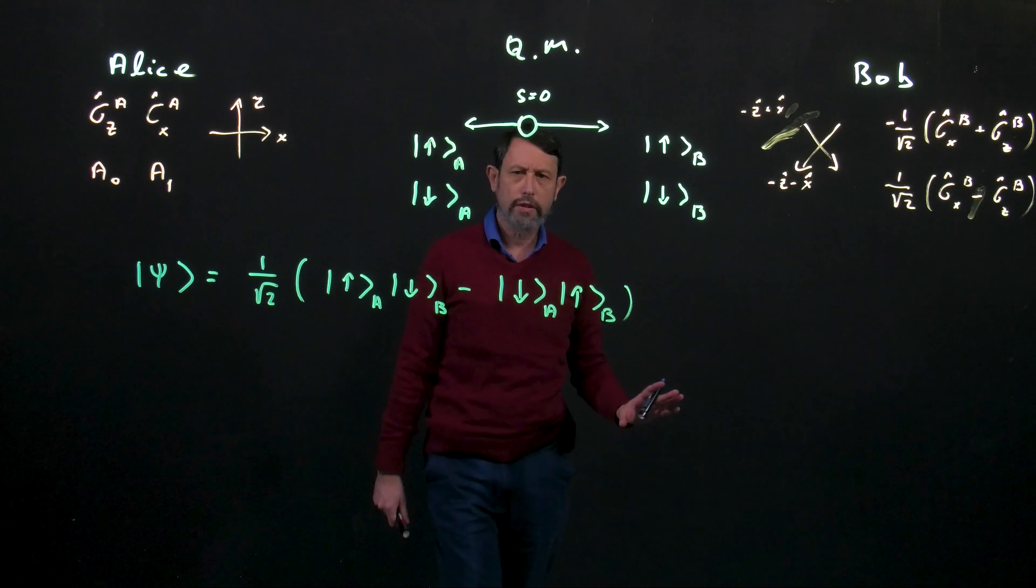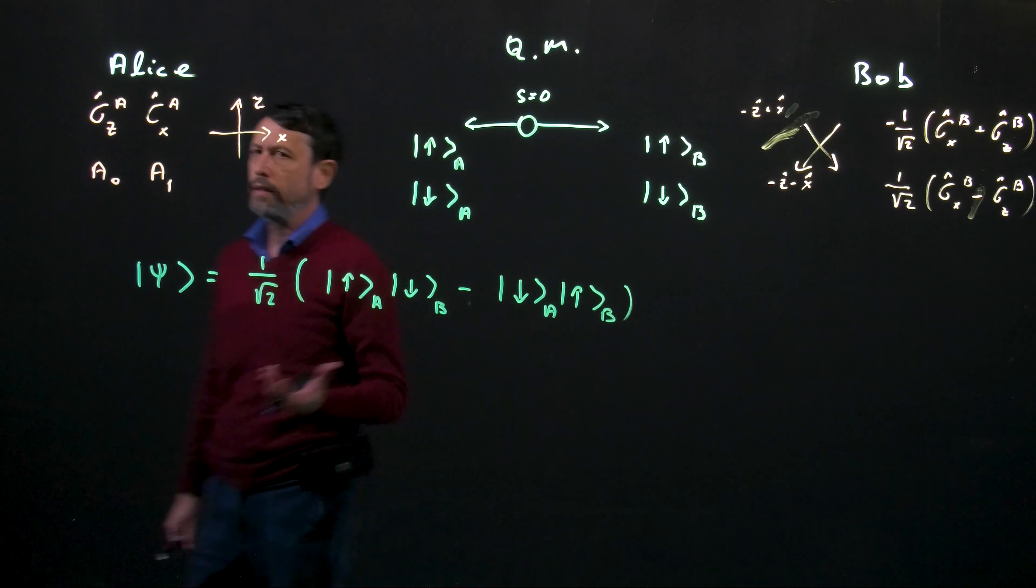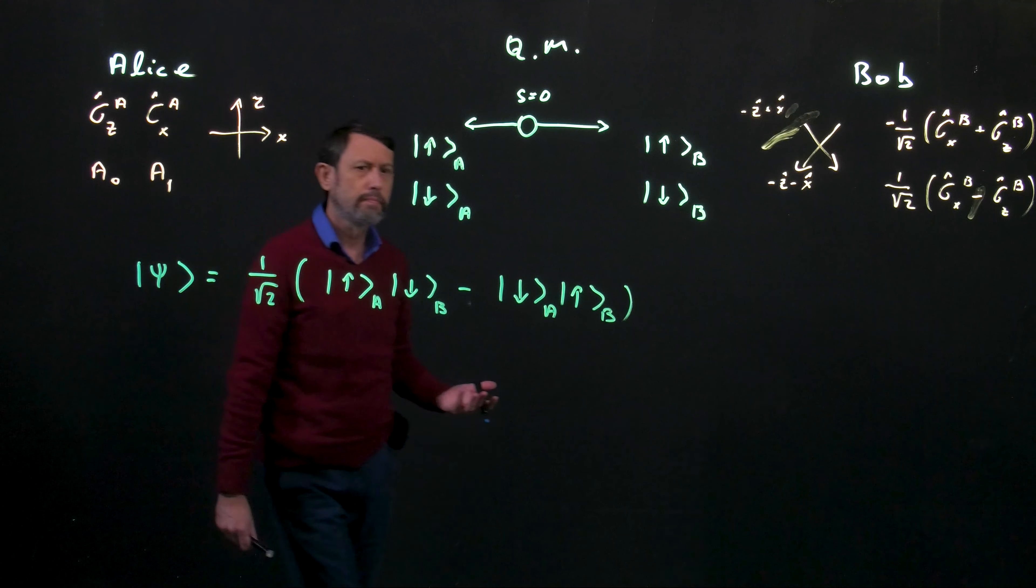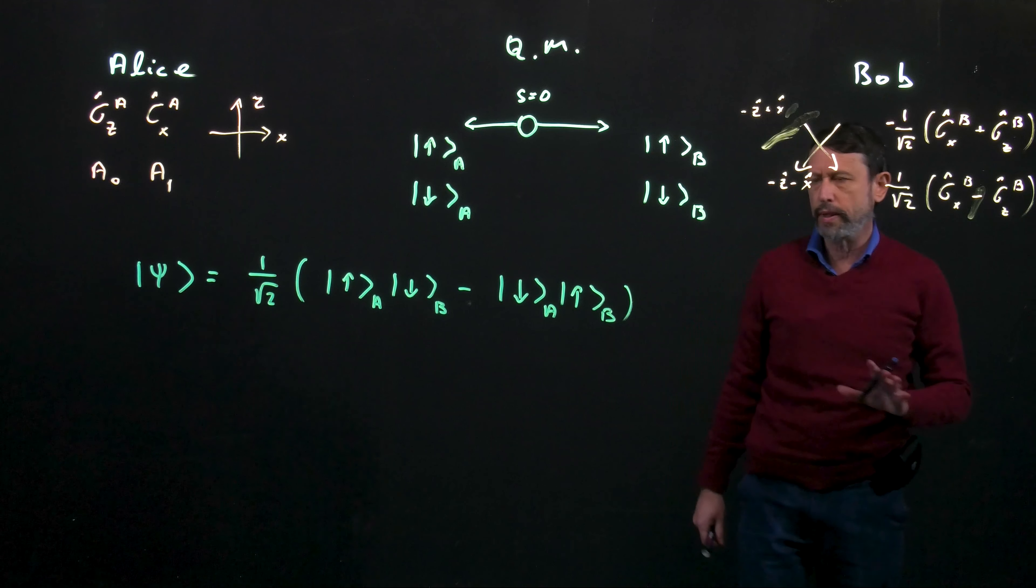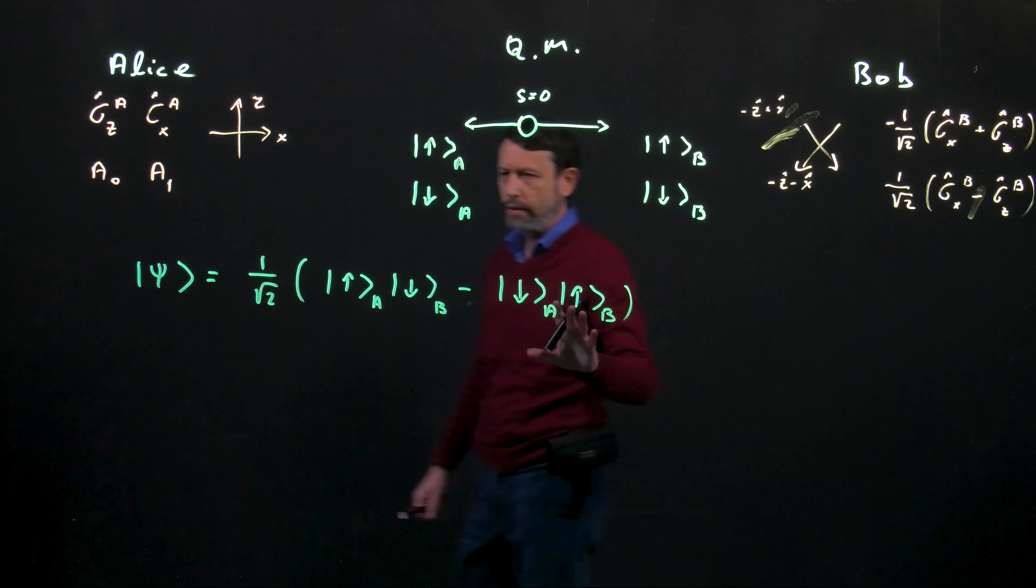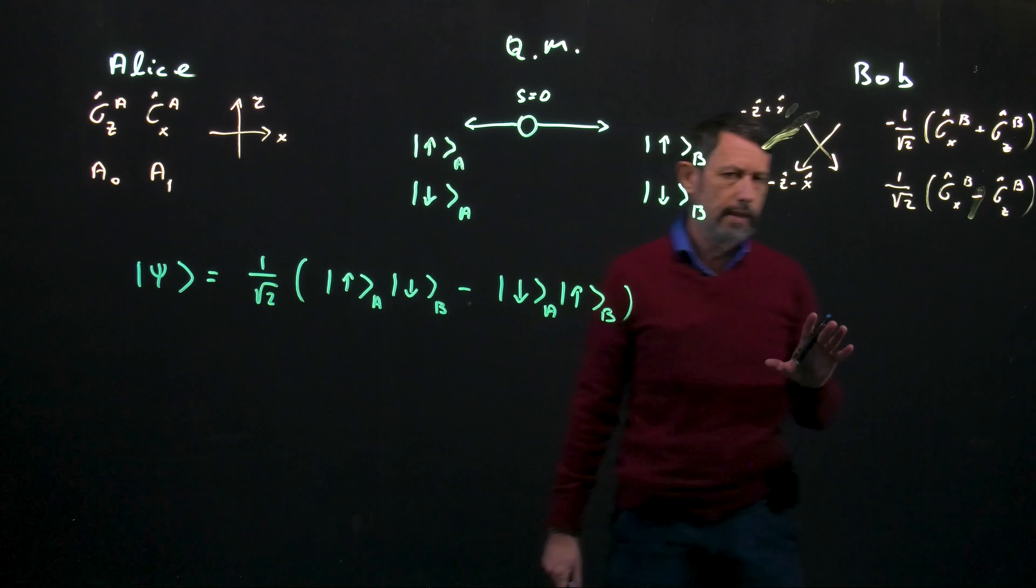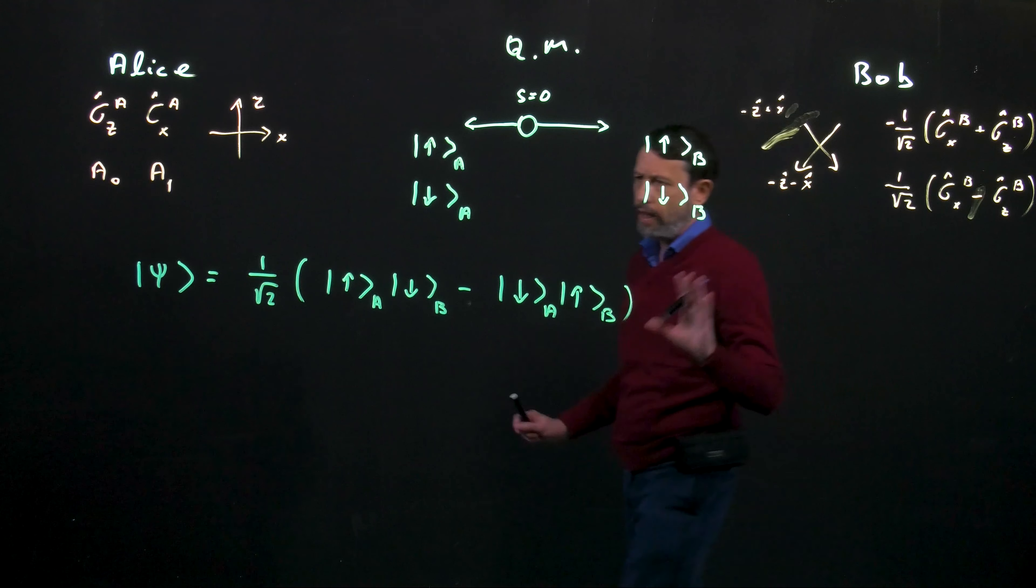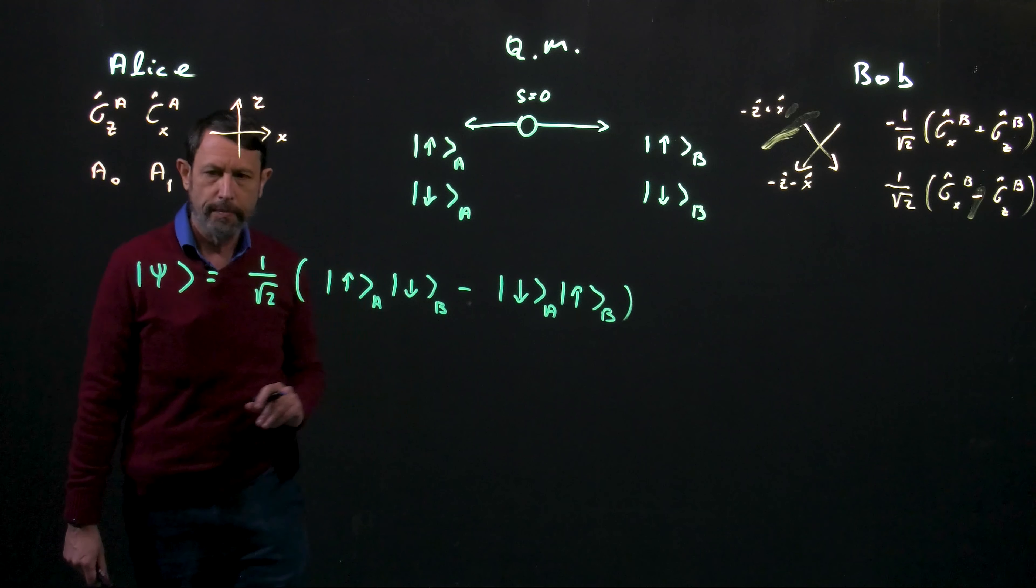Either Alice particle is up and Bob's is down or vice versa. Okay now you can stop me a minute and ask why is there a minus here? Why isn't it a plus? That has reasons that has to do with the symmetry of the solution. You will study it once you study angular momentum. At the moment, accept that this is a minus.